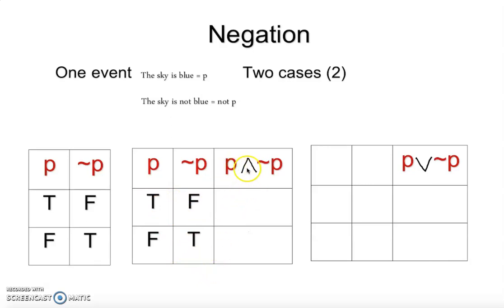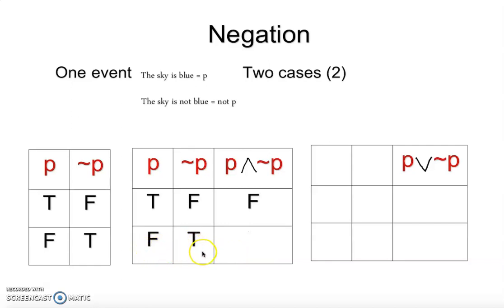Now I'm going to find the conjunction. What is conjunction? Conjunction is basically AND — intersection. Something is happening at the same time. Do you think 'the sky is blue' AND 'the sky is not blue' can happen at the same time? No, never — it is going to be false. So true AND false is false, and false AND true is also false for conjunction.